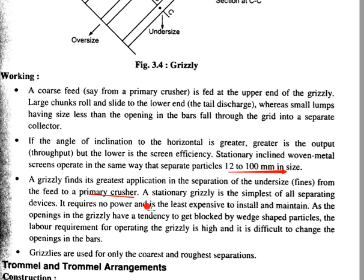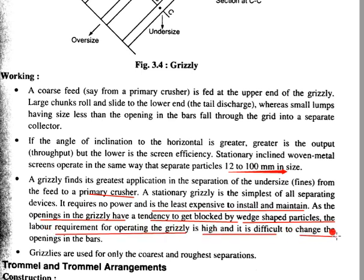The primary crusher application makes the grizzly the simplest of all separating devices. It requires no power and is less expensive to install and maintain. However, openings in a grizzly have a tendency to get blocked by wedge-shaped particles. Labor requirement for clearing the openings is higher and it is difficult to change the opening between bars. Grizzlies are used only for the coarsest and roughest separations.